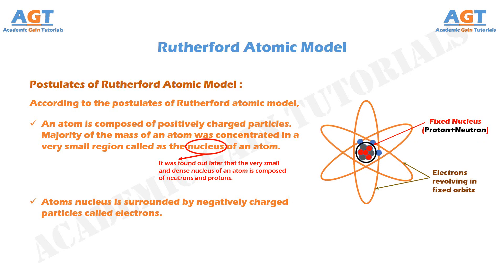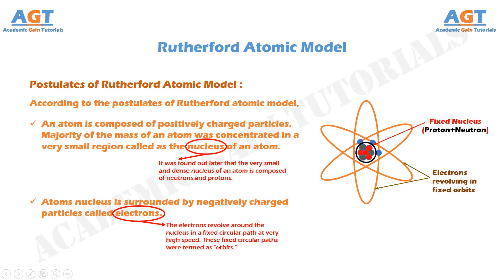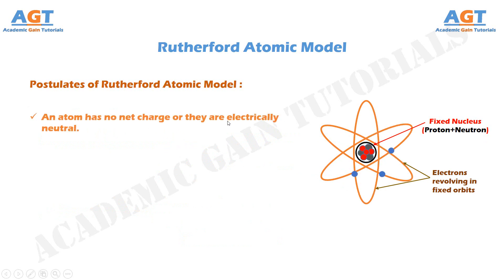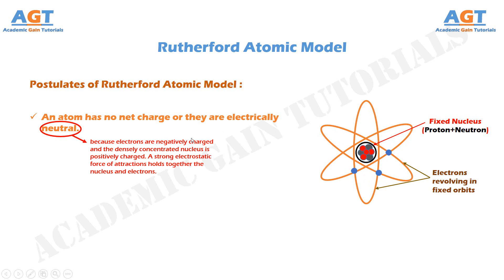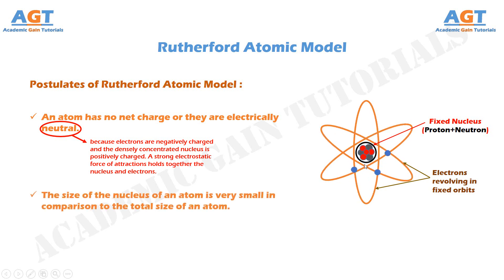The electrons revolve around the nucleus in fixed circular paths at very high speed. These fixed circular paths are termed as orbits. An atom has no net charge — they are electrically neutral — because electrons are negatively charged and the densely concentrated nucleus is positively charged. A strong electrostatic force of attraction holds together the nucleus and electrons. The size of the nucleus is very small in comparison to the total size of an atom.